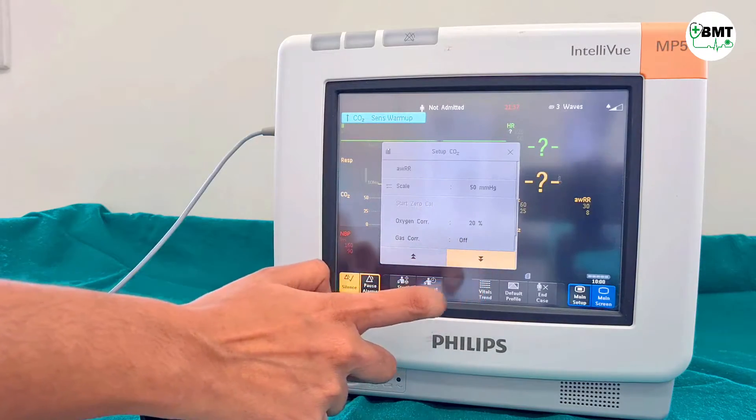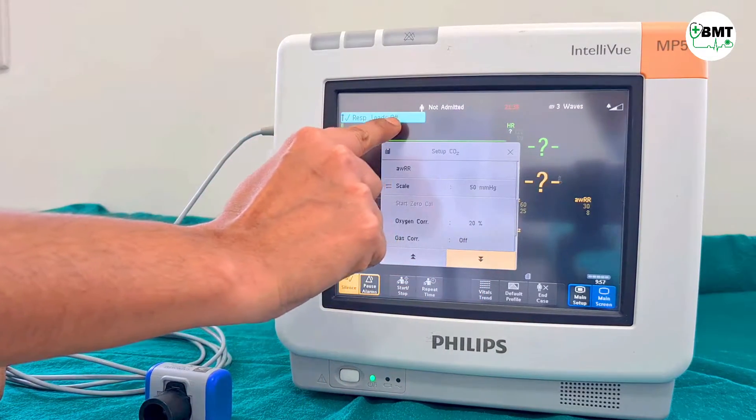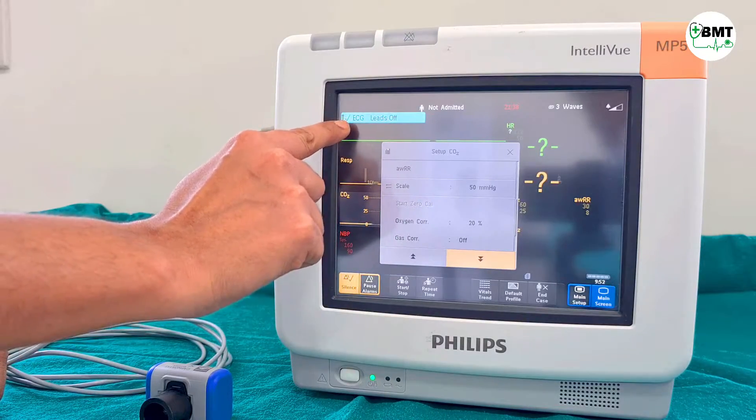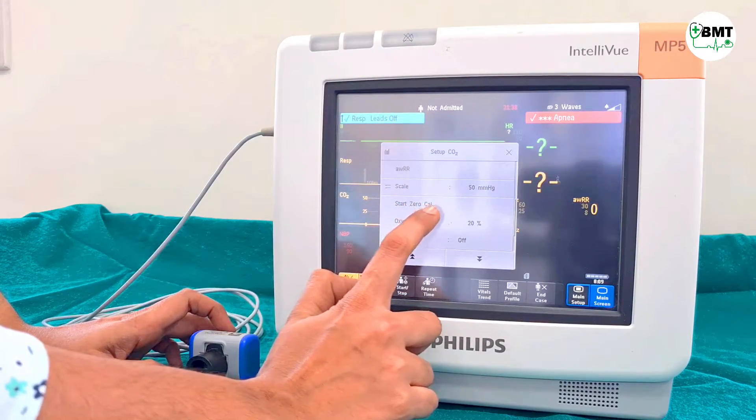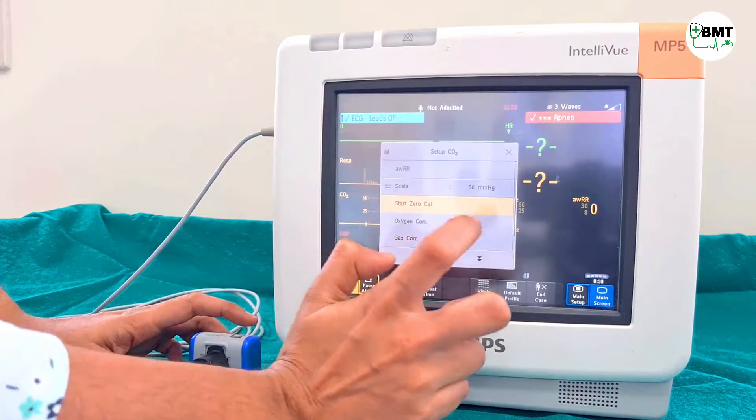Down arrow. Now CO2 sensor warm up is going on. Once warm up is done, start zero cal will appear. Now press this.